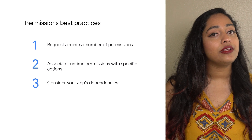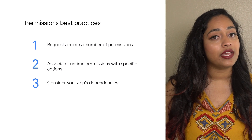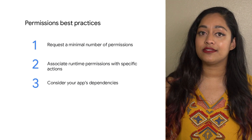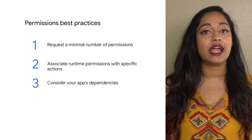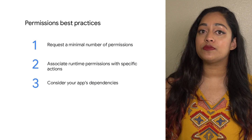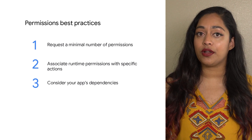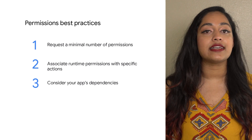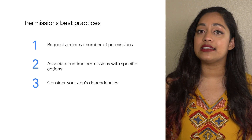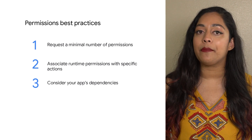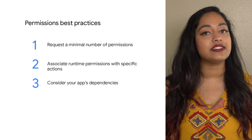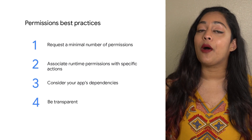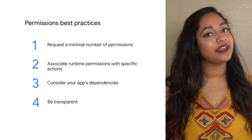Third, when you include a library, you also inherit its permissions requirements. Be aware of the permissions that each dependency requires and what those permissions are used for. Android 11 introduced a data access auditing API to gain insights into how your app and its dependencies access private data. Lastly, be clear about what you're accessing and why.